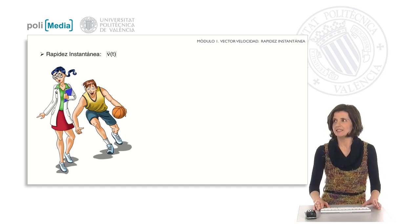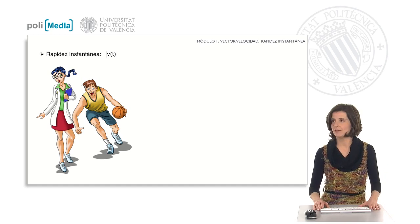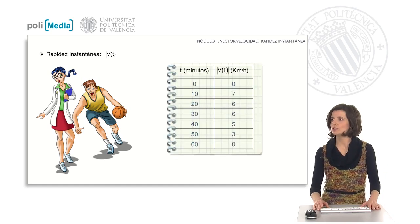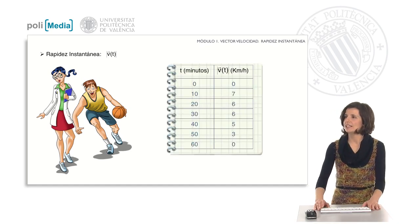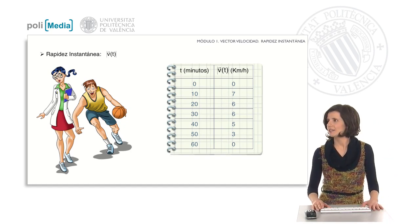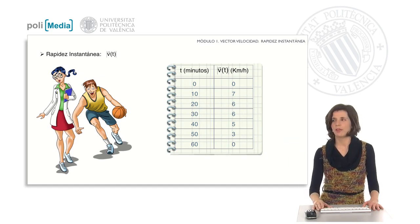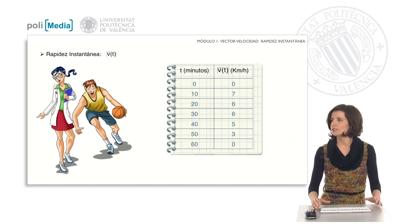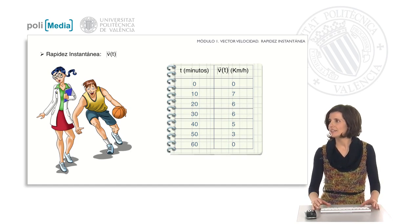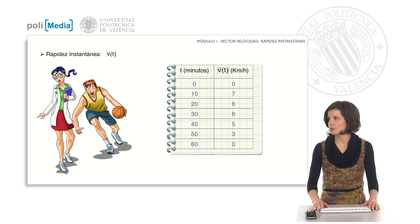As its name indicates, instantaneous speed depends on the instant of time. While Jay was training, Amanda calculated the instantaneous speed during their walk to the basketball court. Initially they were at rest and their velocity was zero. Then they started walking at a good pace — at the ten-minute mark, for instance, the speed was 7 kilometers per hour.